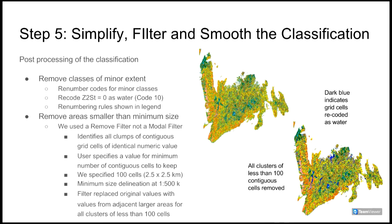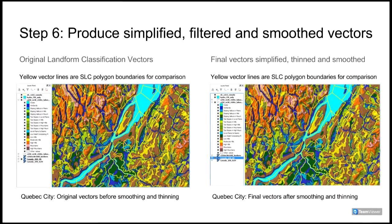In Step 6, we used the functionality available in GRASS GIS to first convert our smoothed and simplified raster of landform classes into vector polygons. Then we built a clean vector topological structure for all polygons. Next, we removed and dissolved any remaining small polygons below a minimum acceptable area. Finally, we smoothed and thinned the new vector polygons to remove any unneeded vertices and to produce a more aesthetically pleasing set of polygons with a smaller file size. The yellow lines in these examples display the existing SLC polygons and permit a visual comparison of the new polygon fabric to the existing SLC polygons.